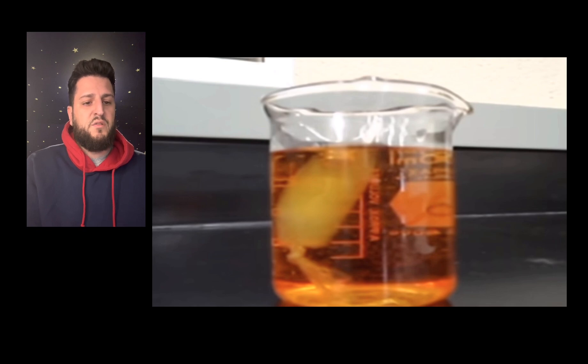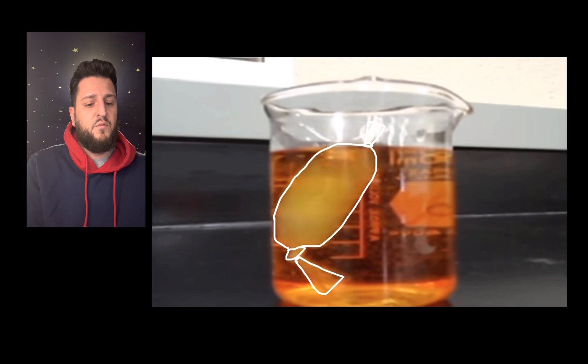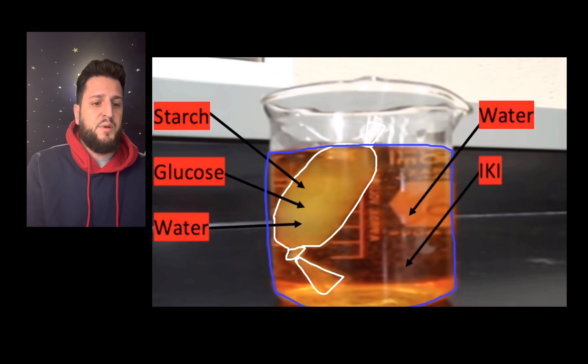Once you start watching the video, you'll notice there is a bag of dialysis tubing within the beaker of water. The dialysis tubing is kind of a whitish yellowish color and is sealed off on both ends. Inside the dialysis tubing, we have three things: starch, glucose, and some water to dissolve the starch and glucose inside the dialysis tubing.